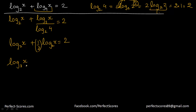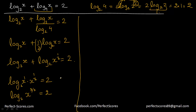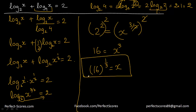Using the power law, log x base 2 plus log of x to the power one-half base 2 equals 2. Applying the multiplication law: log base 2 of x times x to the power one-half equals 2, which is log base 2 of x to the power 3 over 2 equals 2. So 2 to the power 2 equals x to the power 3 over 2. Squaring both sides: 16 equals x to the power 3, so x equals 16 to the power one-third.